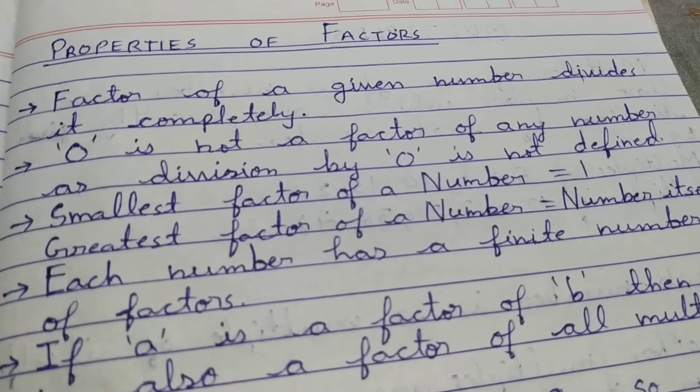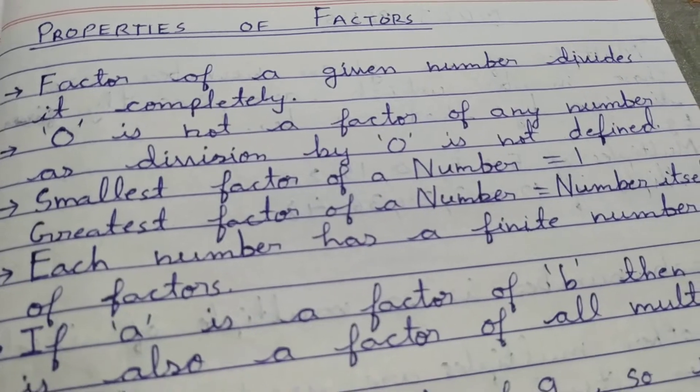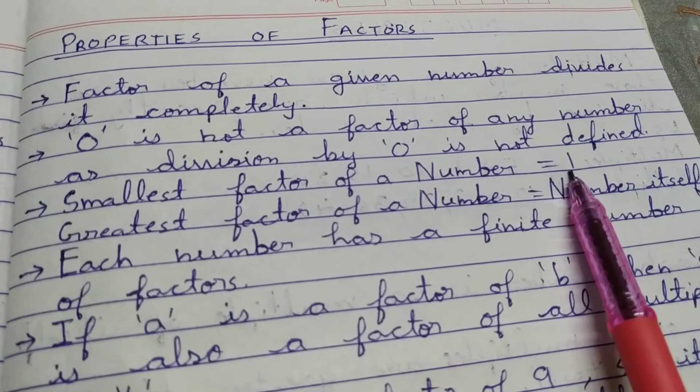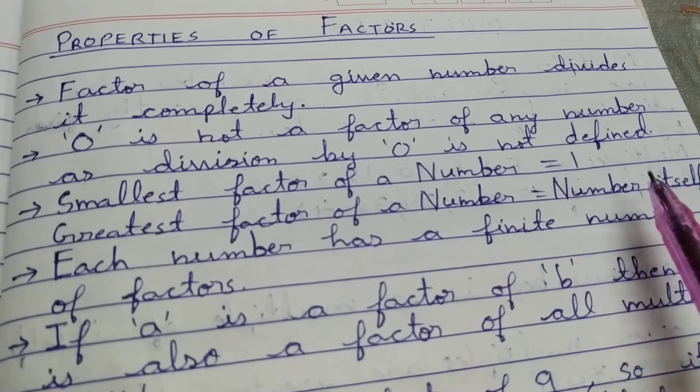One divides each number, and each number divides itself. So the smallest factor of a number is 1, and the greatest factor is the number itself.